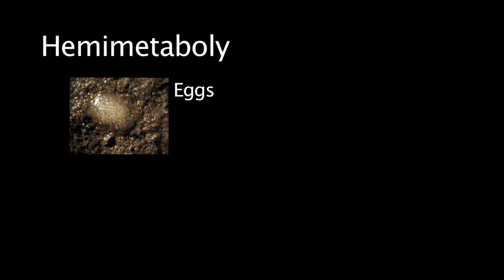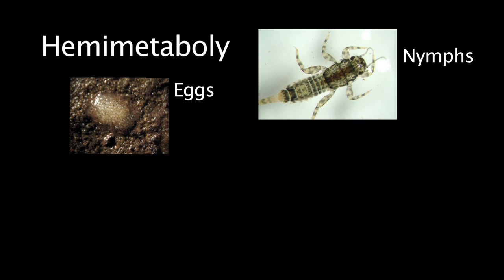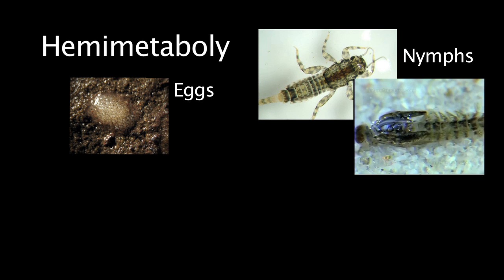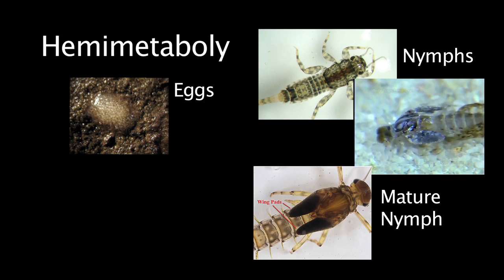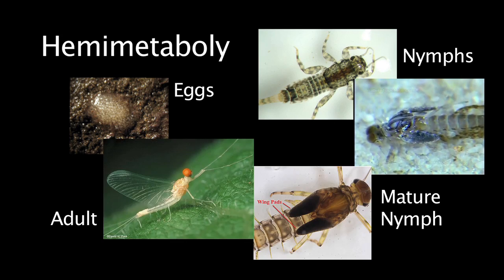They also exhibit one of two major life history strategies. Some insects are hemi-metabolous. This basically means that the eggs give rise to nymphs, which look pretty much like adults but are missing wings. These little fellows will molt several times and grow and form wing pads, which will eventually turn into winged adults.